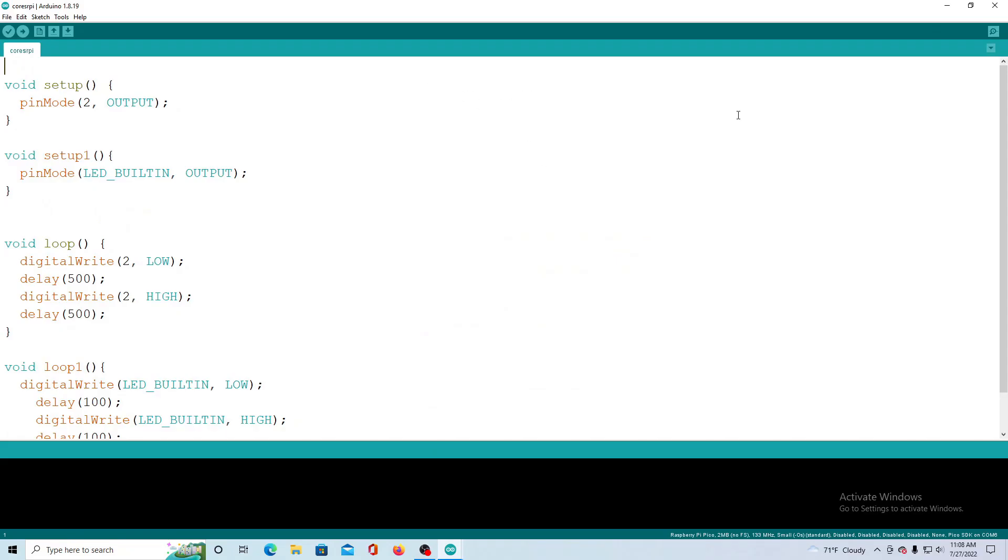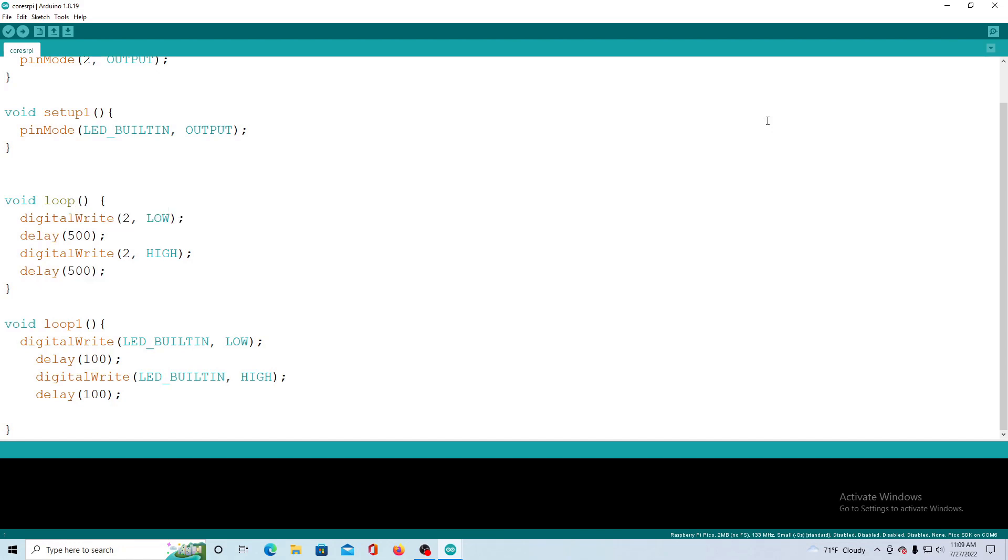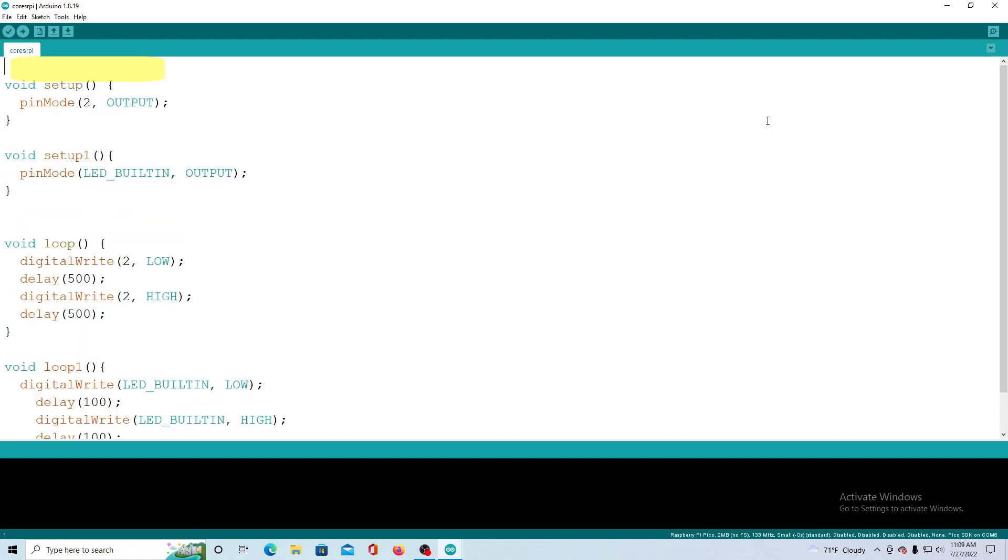Here is the first sketch. This one uses simple multi-core programming. It runs separate functions on each of the two cores of the Raspberry Pi Pico. Let's go through it line by line. We don't need to include any headers or special libraries to support the Raspberry Pi Pico and multi-core processor programming.